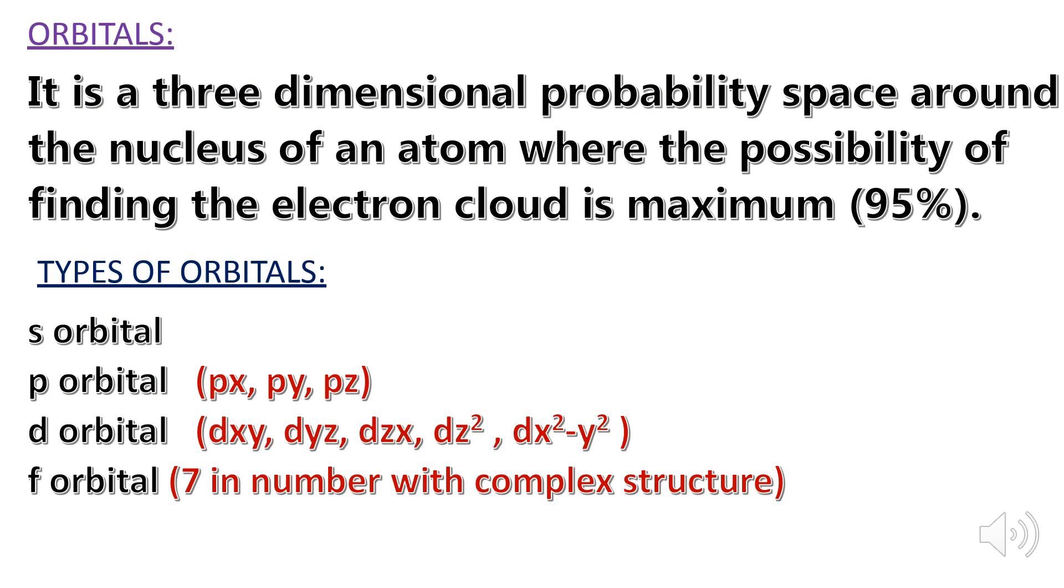So, what are orbitals? It is the three-dimensional probability space around the nucleus of an atom where the possibility of finding the electron cloud is maximum.